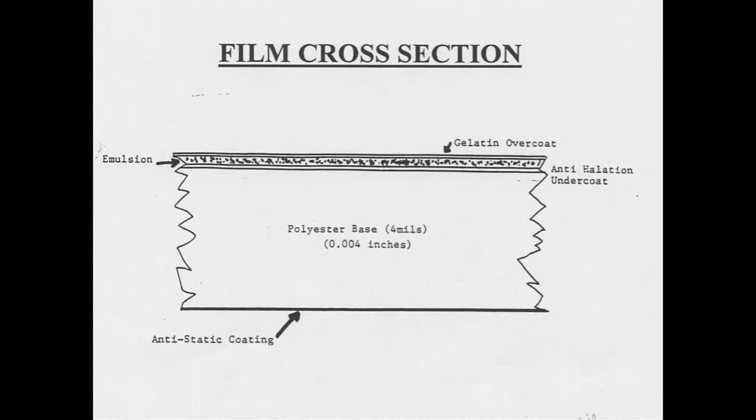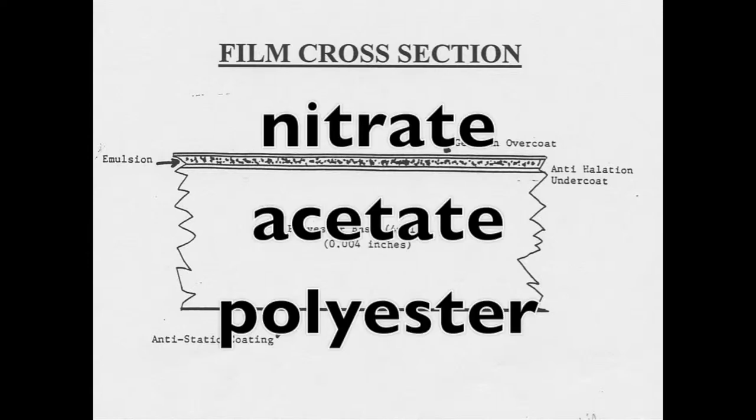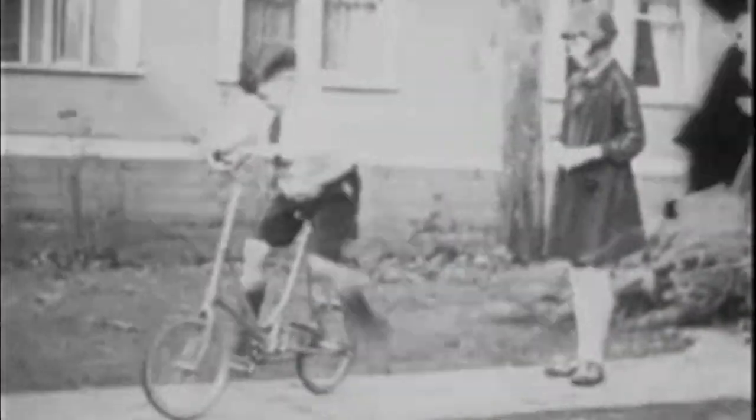There are three basic film bases: nitrate, acetate, and polyester. Nitrate was the first roll film commercially available. It ushered in the age of motion pictures.